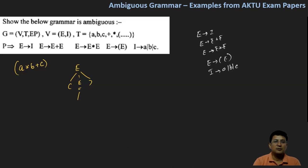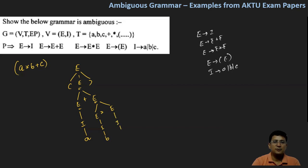So let's say E produces E plus E. In leftmost derivation, E will expand. Let's say E produces I and then the leftmost symbol I produces A. Let's say E produces E multiplied with E. Let's say E produces I and I produces B. And let's say this E produces I and this I produces C.